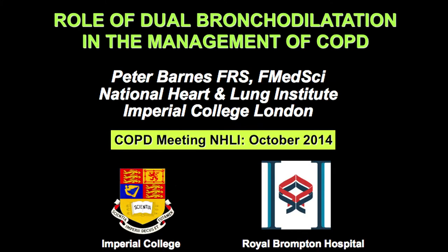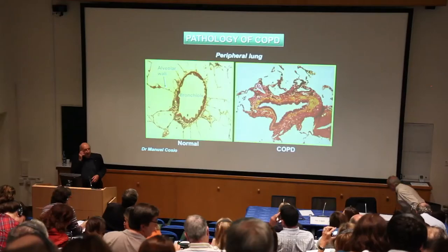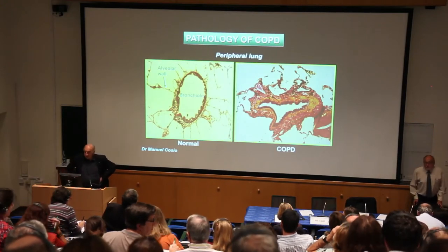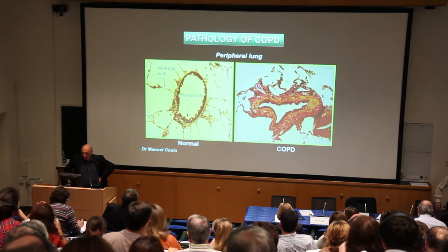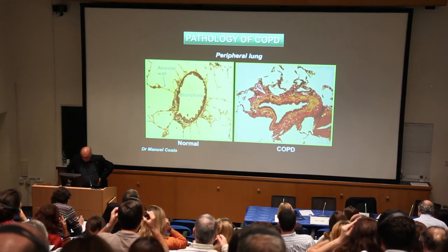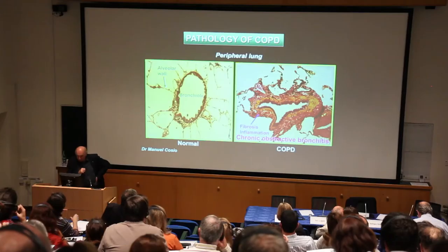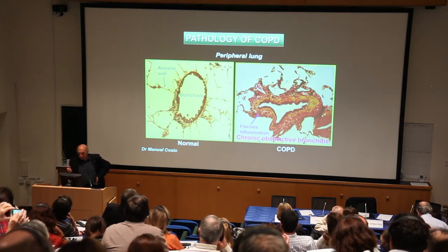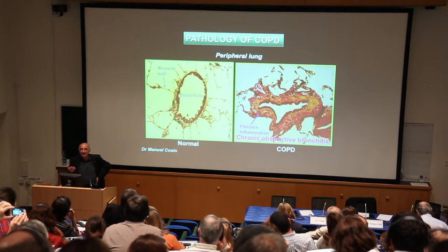I start with the pathology of COPD because this is how the peripheral lung is in COPD compared with normal. You can see there are two striking differences. The most striking difference is that the airway is narrow, distorted, and thickened. This is because of fibrosis, which is progressive and a consequence of inflammation.